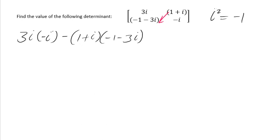So then minus, open bracket (1 + i) times (minus 1 minus 3i). Then you have to expand this, so if you expand this you're going to get minus 3i².